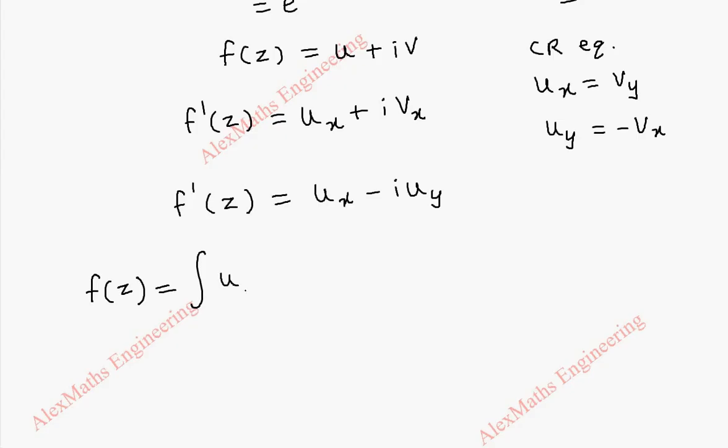So here, the f(z) formula is: integral of u_x(z, 0) with respect to z minus i times integral of u_y(z, 0) with respect to z, that is dz, plus c.